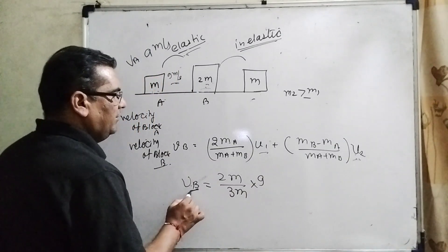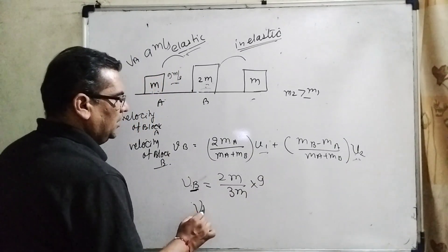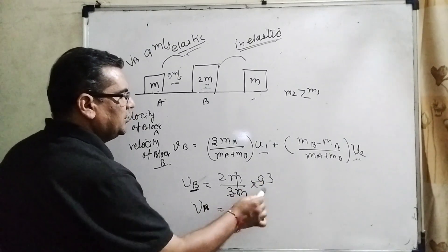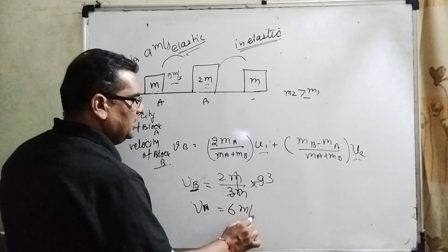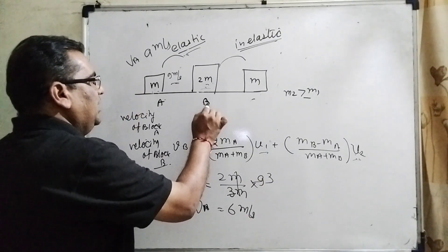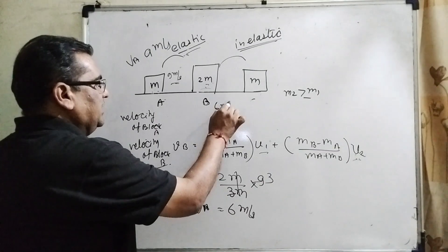So here we have to find the velocity of VB. So we get the velocity VB is 6 meter per second.